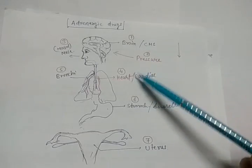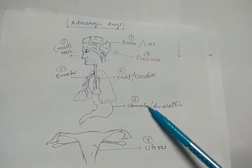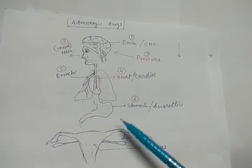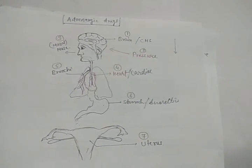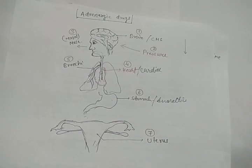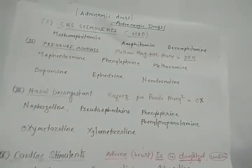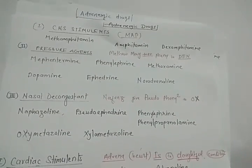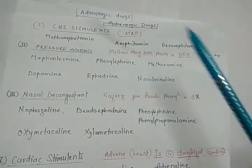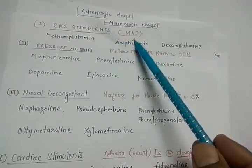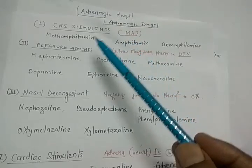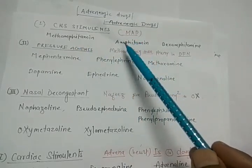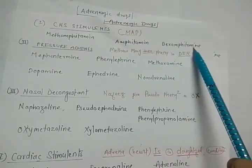Now let's move towards the drugs, their categories, and the tricks for memorizing them. For the first category, CNS stimulant, I use the term MAD: M stands for methamphetamine, A for amphetamine, and D for dexamphetamine.